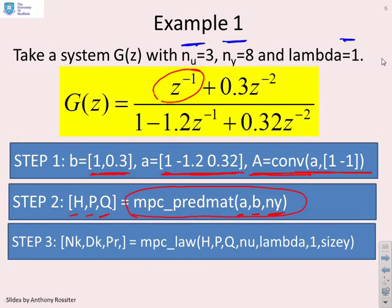Step three, you want to find your control law. So that's called MPC_law. And what does that need? It needs H, P, and Q, your prediction matrices. It needs to know N_u because we need to know how many columns of H to use in the computation. We need lambda, obviously.